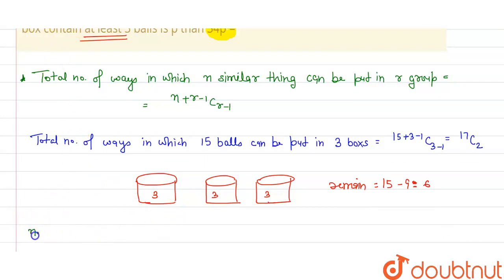So number of ways to put 6 balls into 3 boxes, that is equal to 6 plus 3 minus 1 C 3 minus 1, this is equal to 8C2.